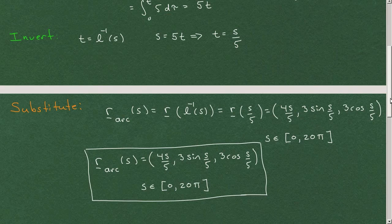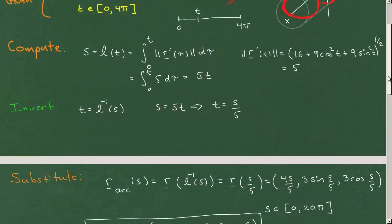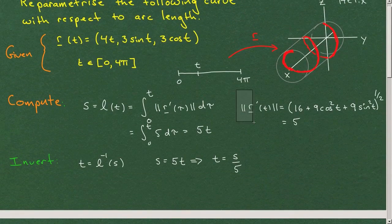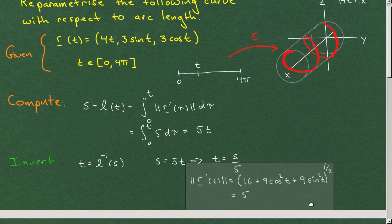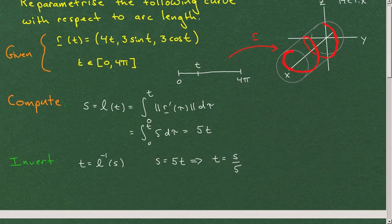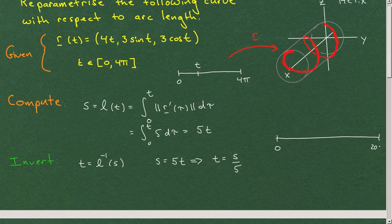And I just want to emphasize graphically, let me see if I can squeeze it in here. So this is our original parameterization. We have now constructed a new parameterization over a different interval, not 20π.